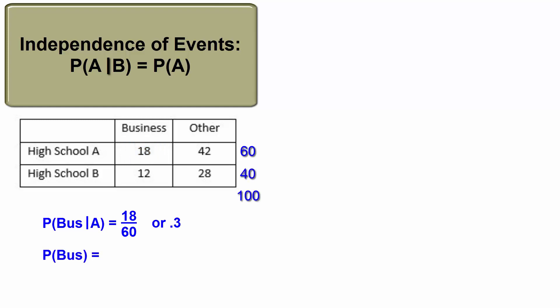Look at all 100 students from the two schools combined. Also 0.3 or 30% are declaring a business major. So the conditional probability equals the overall probability, hence the events declaring a business major and being a senior at high school A are independent.